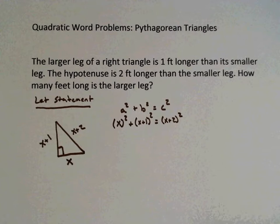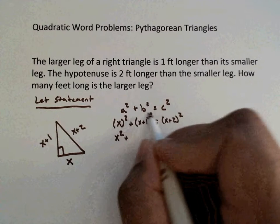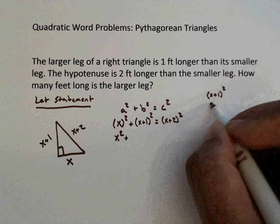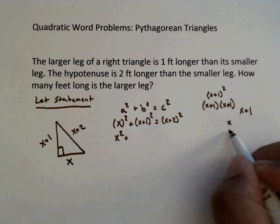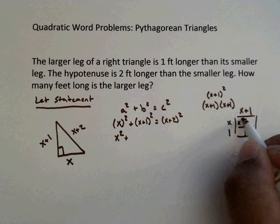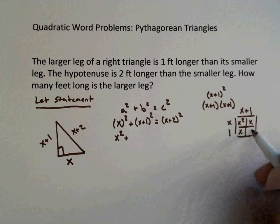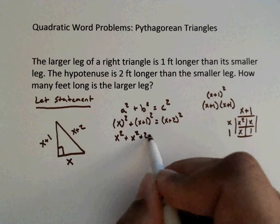I'm going to solve this X plus 1 squared. Remember, X plus 1 squared means X plus 1 times X plus 1, which means we need to do the box. We know that's X squared, 1X, 1 times X is 1X, 1 times 1 is 1. So we get X squared plus 2X plus 1.